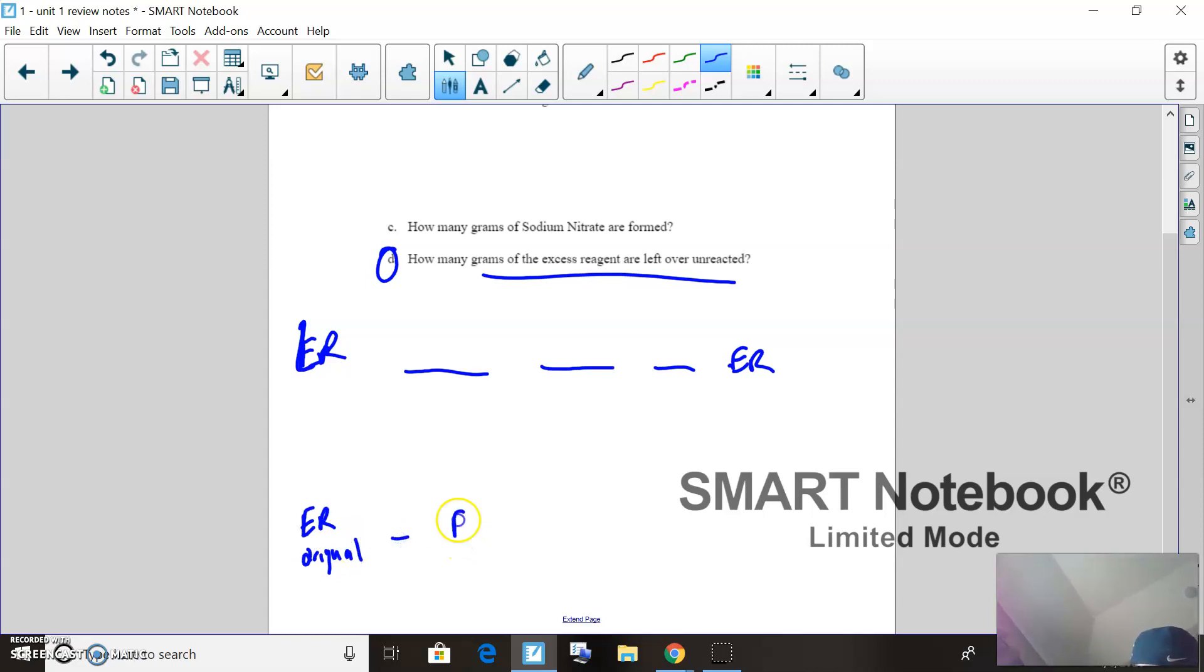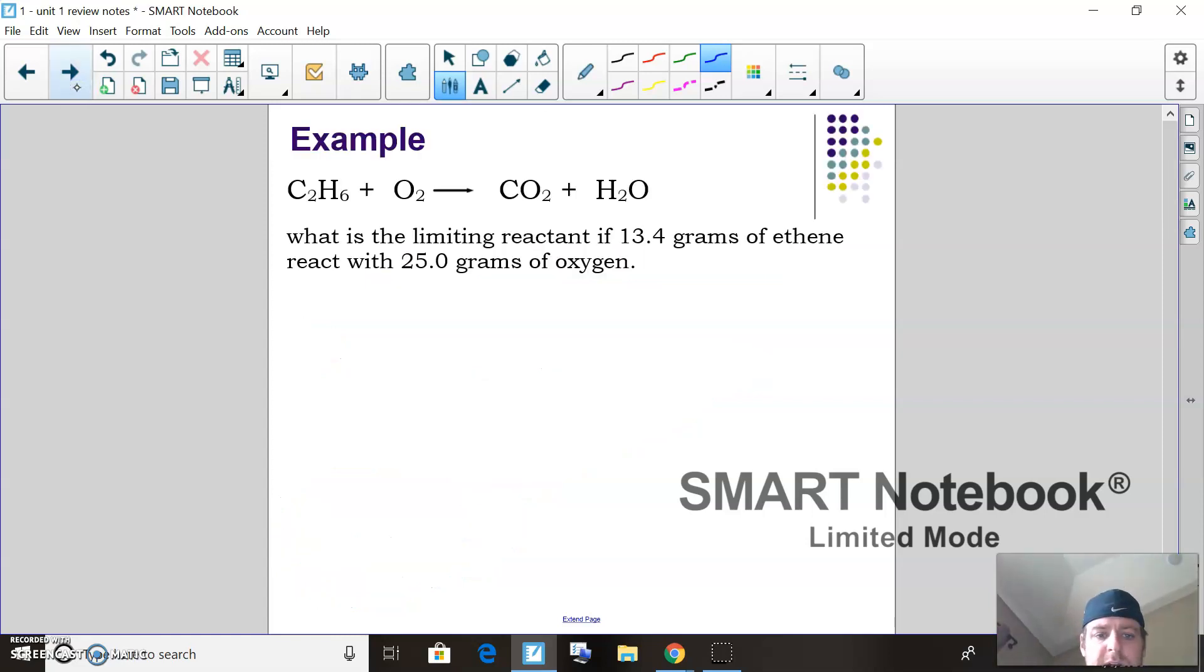Minus the excess reactant from there. What that's going to tell you is how much is left over. You can try that, but that's a super A-level question. Another limiting reactance problem—set it up. If you have two numbers, how do I know it's a limiting reactant? You have two values.